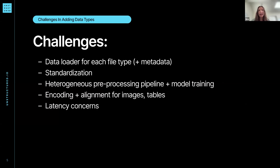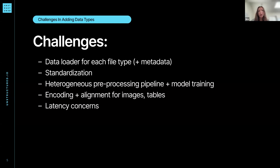You'll have to think about having a heterogeneous preprocessing pipeline and model training. If you have predominantly one type of file but want to include others, you'll have to worry about optimizing for that predominant model and potentially keeping different models all up to date. Then you'll have to think about encoding and alignment for images, tables, and other non-text elements. And if you have a system already built for text, you'll need to think about increases in latency when processing images.